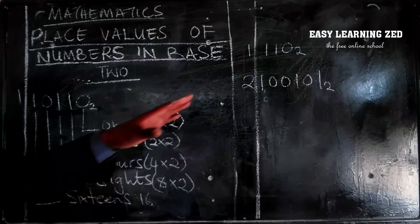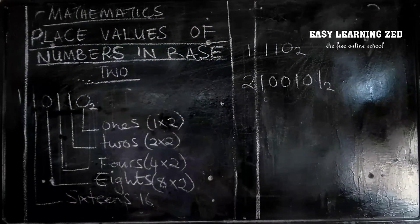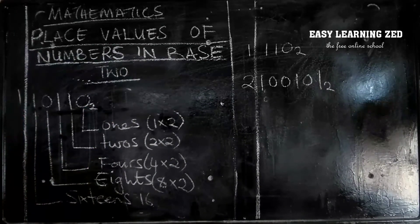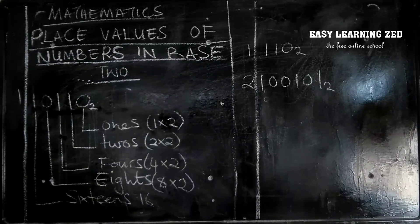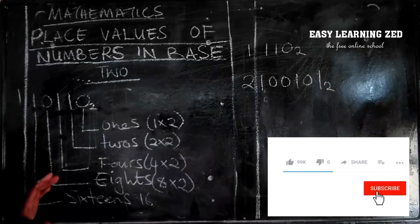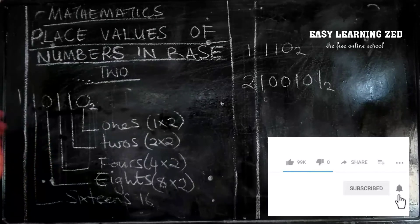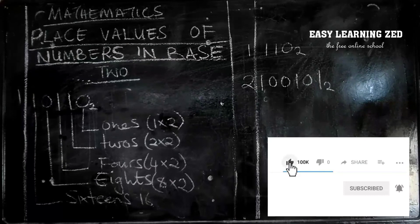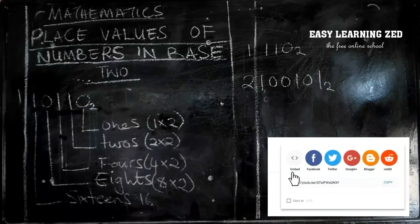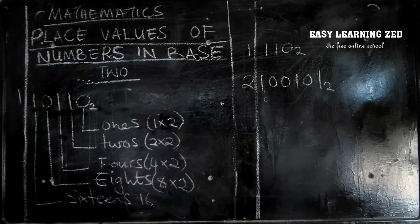Write the place values of those numbers. Why is it important that you know the place value of numbers in base 2? It is important because when we come to converting numbers in base 2 into base 10, we are going to use the place values — the place values will help us to convert the numbers in base 2 into base 10. Thank you so much for watching. Please remember to wear a mask when you are going out, and if it's not necessary, stay at home. God bless you.